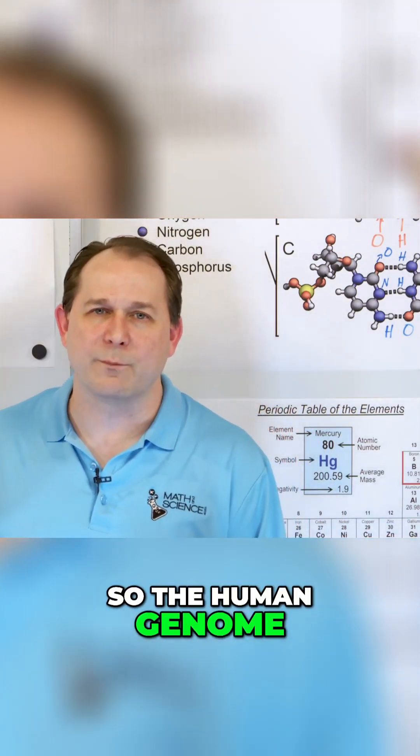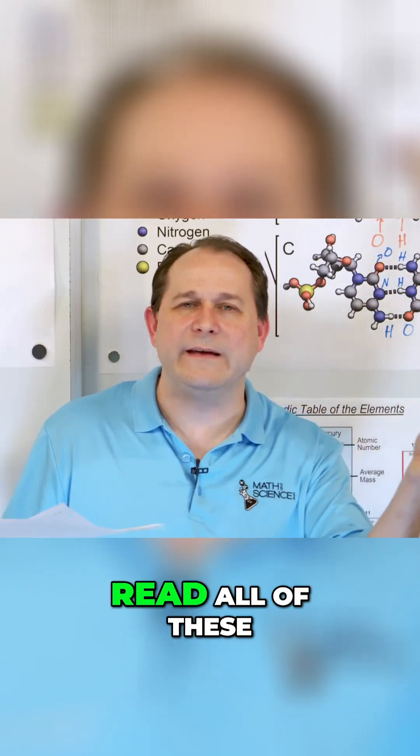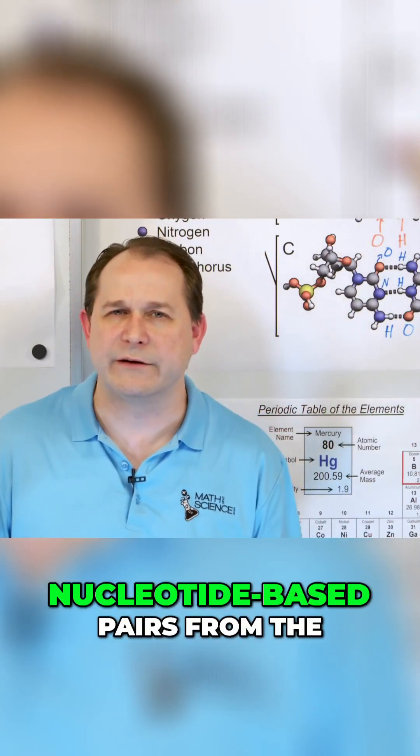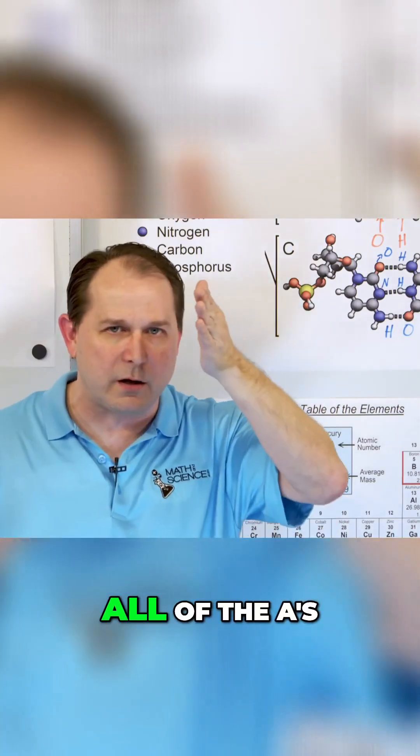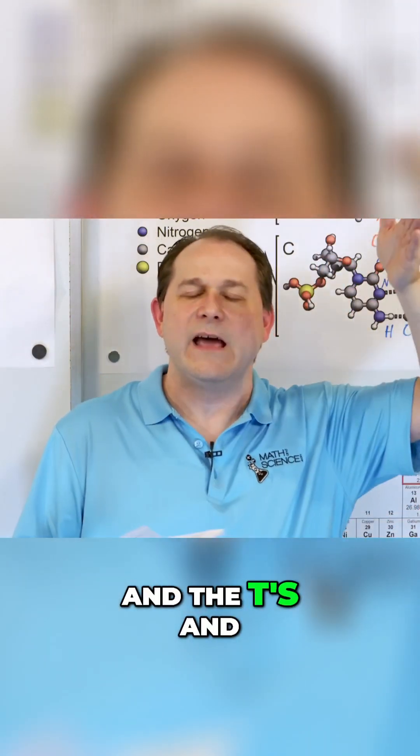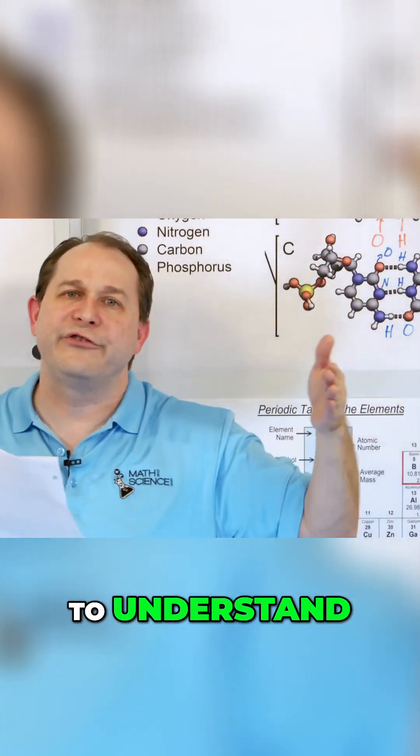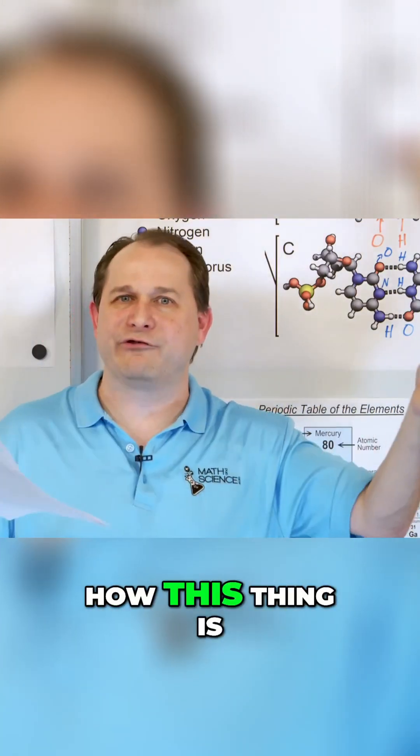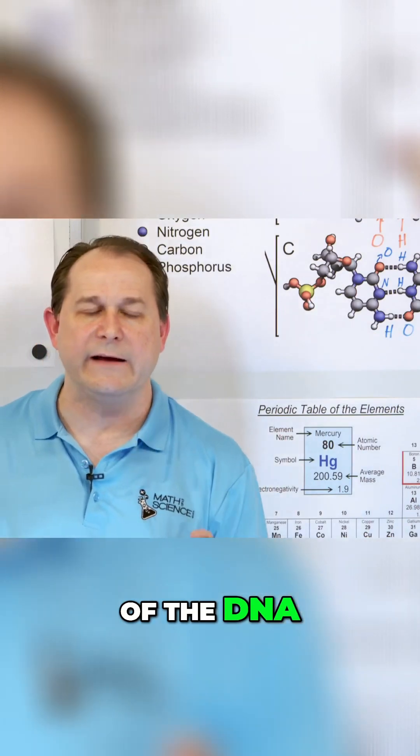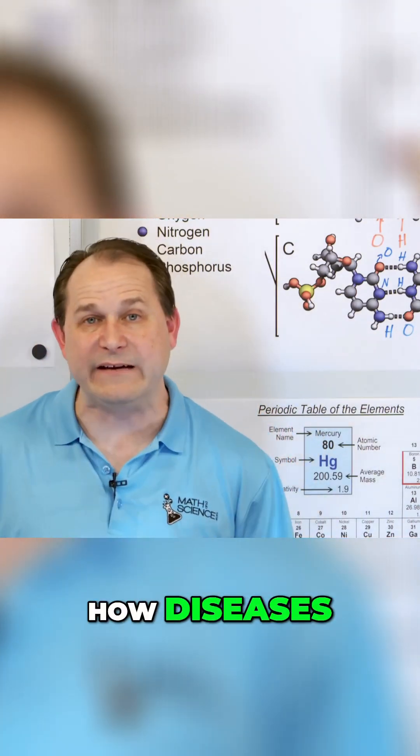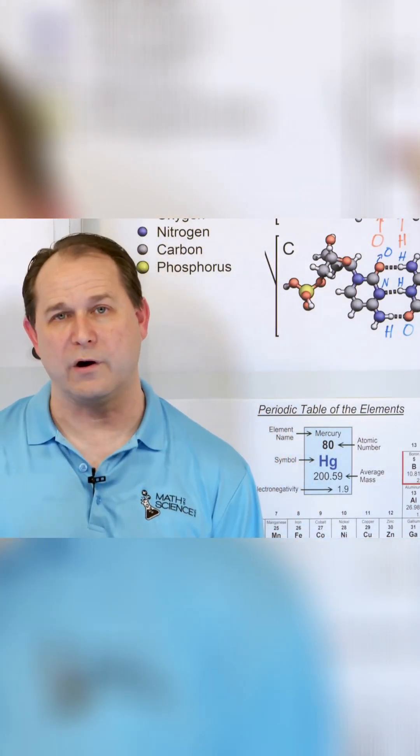So the Human Genome Project was trying to read all of these nucleotide base pairs from the beginning to the end of the DNA molecule, all of the A's and the T's and the C's, to understand how this thing is actually organized and how the genes are set up along the length of the DNA so that we can understand how genetic diseases actually work.